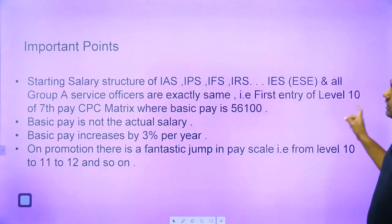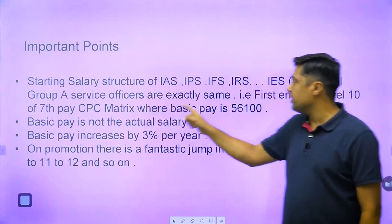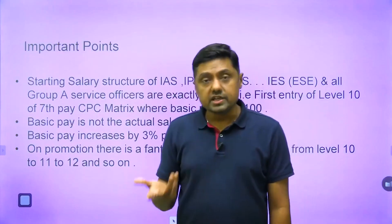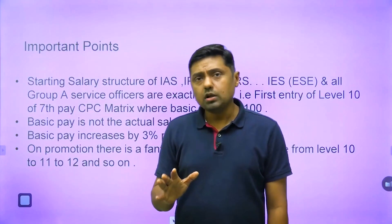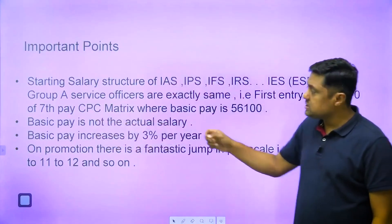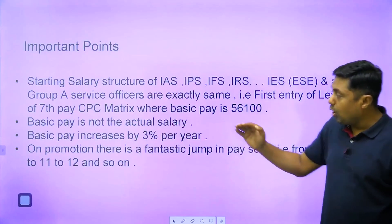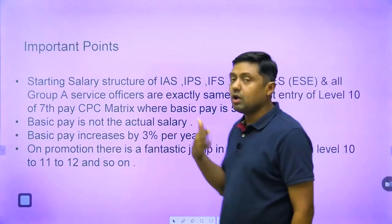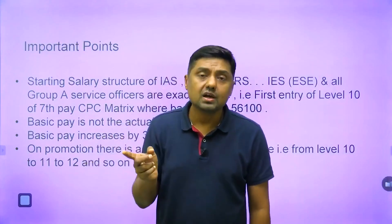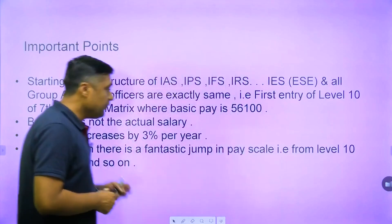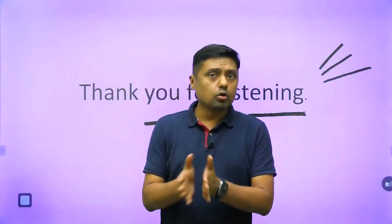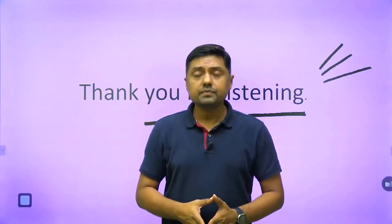The first entry is at Level 10 of the 7th Pay Commission matrix, where basic pay is ₹56,100. You also have eligibility to become Joint Secretary. Basic pay is not the actual salary — it increases by 3% per year, and on promotion there is a fantastic jump in pay scale — from Level 10 to 11, 11 to 12, and 12 to 13 there is a huge hike. Please go through the video, and if you have any doubts or suggestions, comment below, like and share the session, and subscribe to our channel.